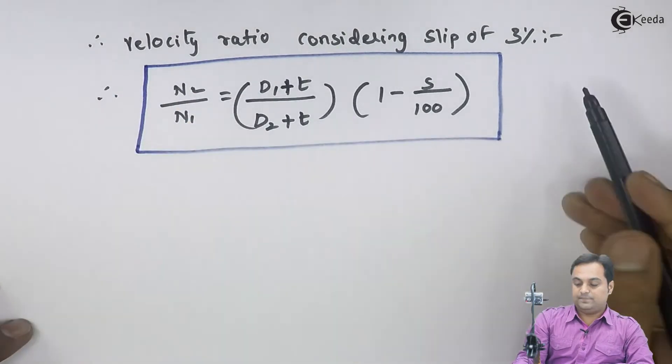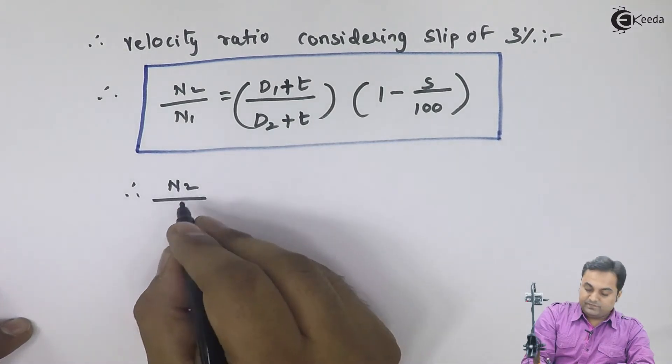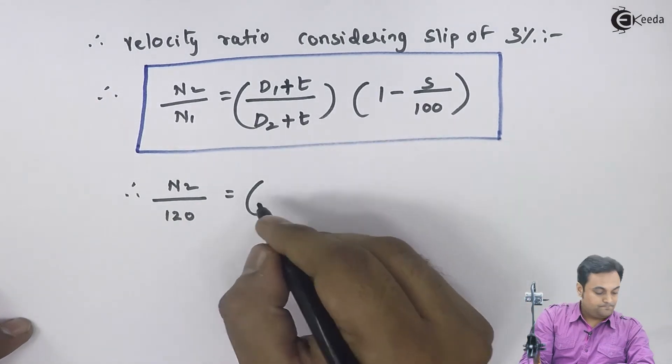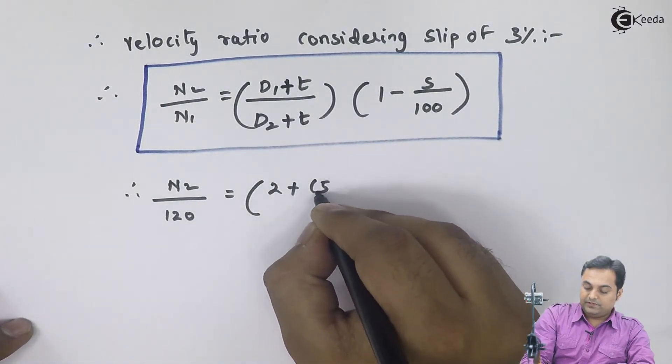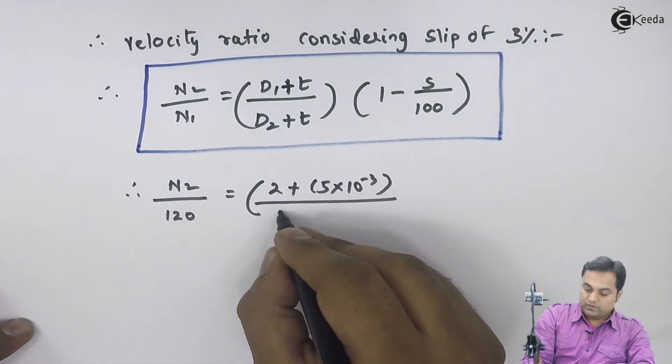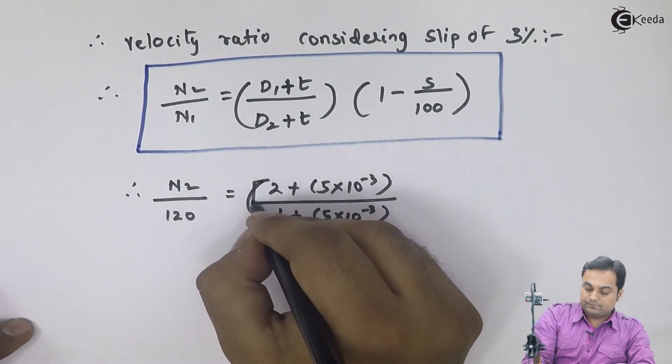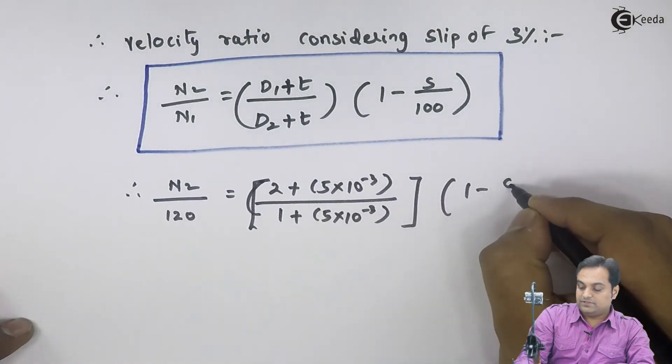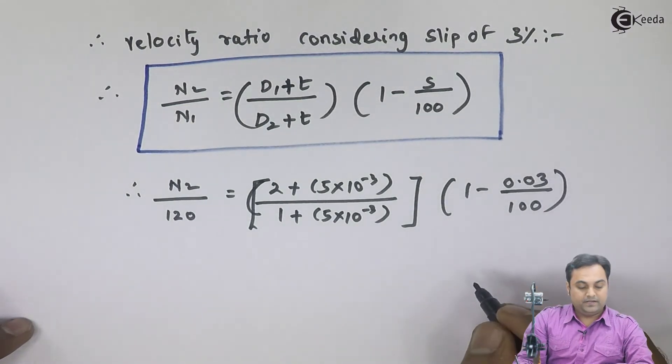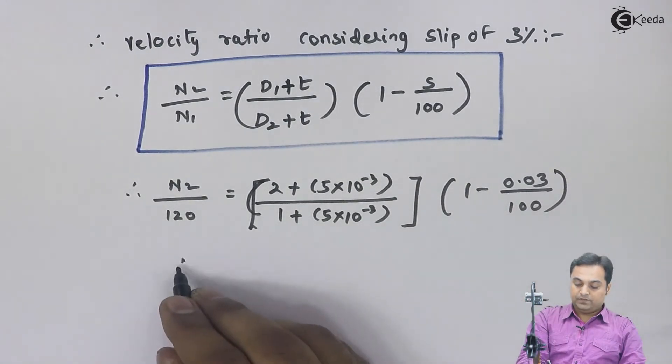Since slip is given as 3%, therefore n2 upon n1 (120) is equal to d1 which is 2 plus 5 into 10 raised to minus 3, upon 1 plus 5 into 10 raised to minus 3, into bracket 1 minus 0.03 (because that is the slip divided by 100).